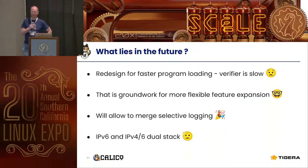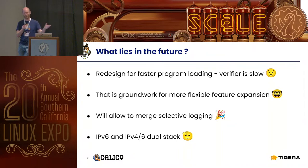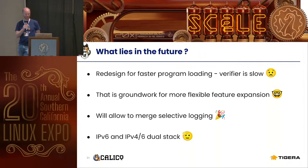Looking at what lies in the future of the BPF data plane: we're currently redesigning the data plane so that we can load programs faster, because the verifier is great but it's also quite slow. That lays the framework for more flexible feature expansion and will allow us to merge selective logging. We also have to admit we still don't support IPv6 in BPF mode, but this redesign will allow us to support IPv6 and IPv4/IPv6 dual stack.